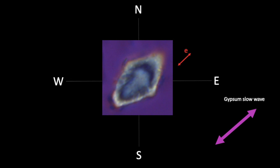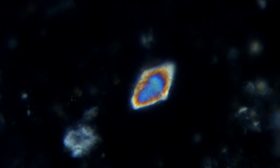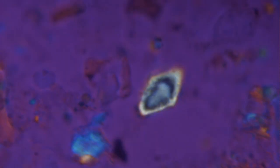So, it's the faster, extraordinary ray that is aligned north-east-south-west. Note that the first order white retardation color of its thin edges becomes first order yellow.